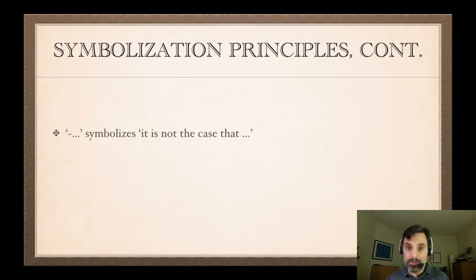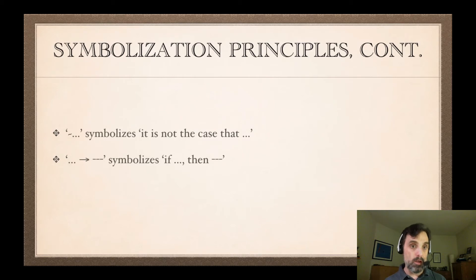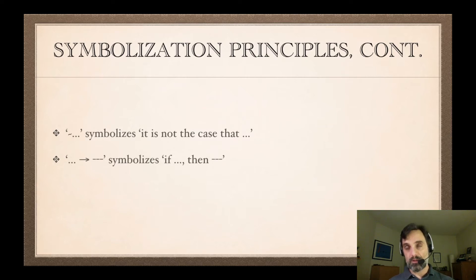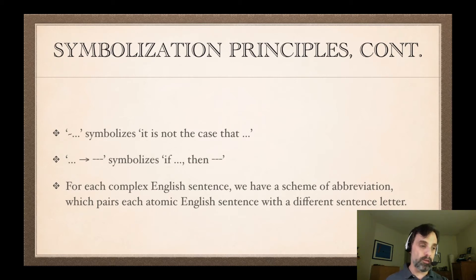The basic obvious principles are these: if we have a sentence in English that says 'it is not the case that [X],' we should symbolize that as 'not [X]' — a negation followed by a symbolization of X. And if we have 'if [X] then [Y],' we should have an arrow, with the antecedent before the arrow symbolizing the English antecedent, and the sentence after the arrow symbolizing the English consequent. For each complex English sentence we'll have a scheme of abbreviation, which assigns a sentence letter to each atomic English sentence. Using that scheme, we then symbolize the whole English sentence.